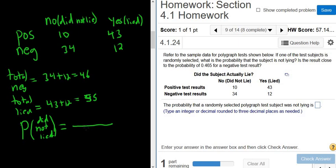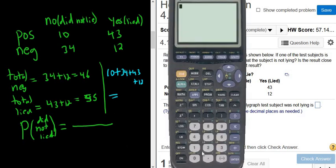So to figure out the total number of ways to pick a result, all you have to do is add up these numbers, all of them. So you do 10 plus 34 plus 43 plus 12. So if you put this in your calculator, 10 plus 34 plus 43 plus 12, you get 99.